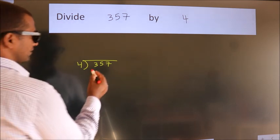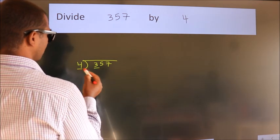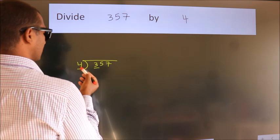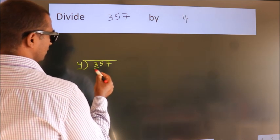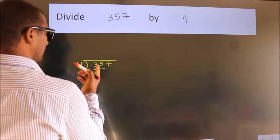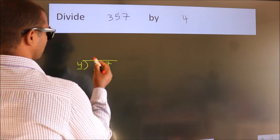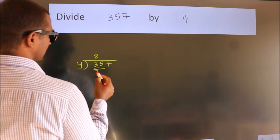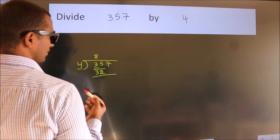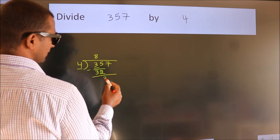Next, here we have 3, here 4. 3 is smaller than 4, so we should take two numbers: 35. A number close to 35 in the fourth table is 4 times 8 equals 32. Now we should subtract. We get 3.